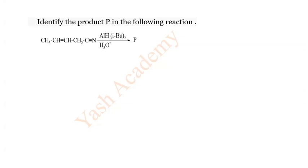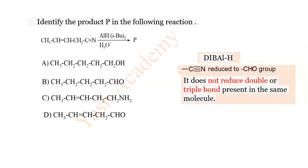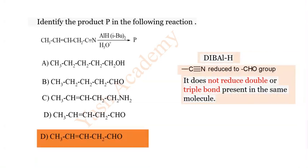Question 15: Identify the product P in the following reaction: CH₂=CH–CH₂–C≡N treated with diisobutylaluminium hydride (DIBAL-H), followed by hydrolysis. The correct answer is D — the double bond is protected and the C≡N is reduced to an aldehyde.